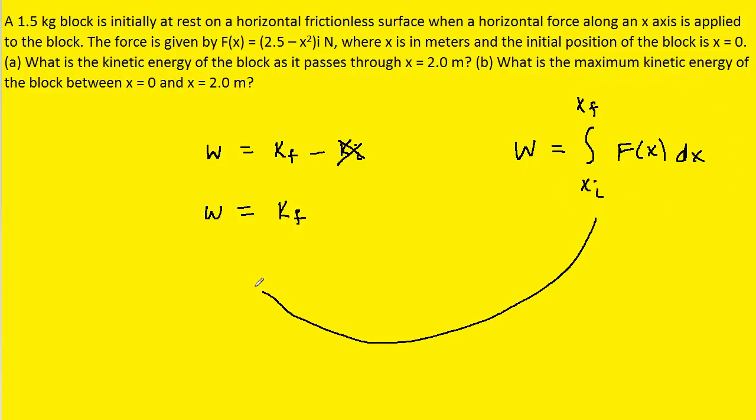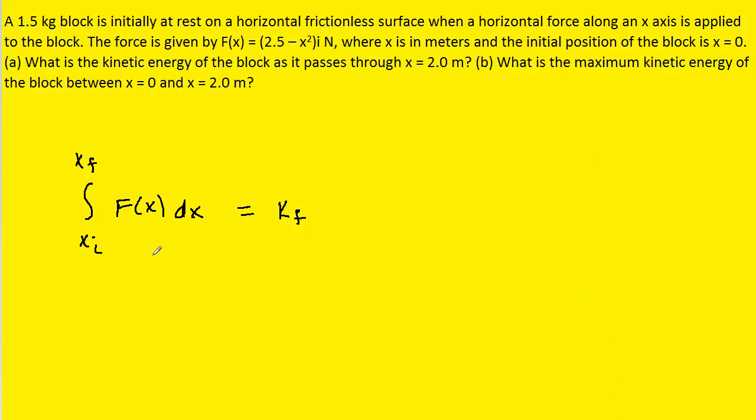We're going to take that integral and plug it in for the work in this equation that we had developed a moment ago. The next thing we can do is actually substitute F(x) with the equation that's given in the question, this 2.5 minus x squared. Now we note that for x sub i, which is the initial position, that is given to us as zero. And then the final position is mentioned in part A of the question. That's going to be two. So now what we have to do is actually integrate this expression using our knowledge of calculus.